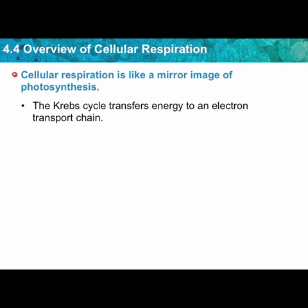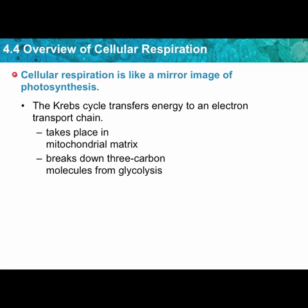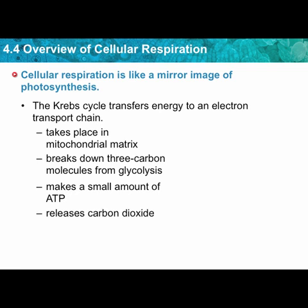The Krebs cycle transfers energy into the electron transport chain and takes place in the mitochondrial matrix — those folds and tucks we saw in the picture before. It breaks down the three-carbon molecules from glycolysis and makes a small amount of ATP. So we've got a couple ATP from glycolysis and a little bit from the beginning of the Krebs cycle. It also releases carbon dioxide, the first byproduct — actually a waste product — of cellular respiration.